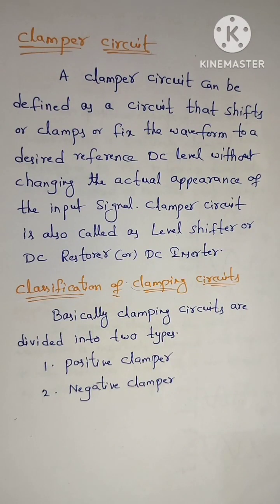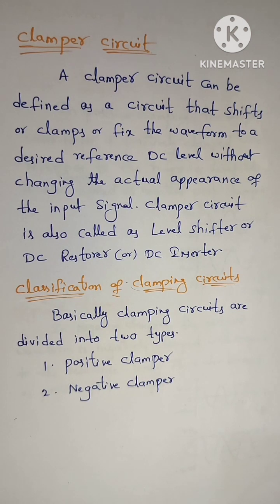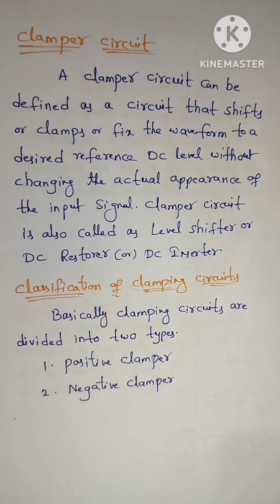A clamper circuit can be defined as a circuit that shifts or clamps or fixes the waveform to a desired reference DC level without changing the actual appearance of the input signal. Clamper circuit is also called as level shifter, DC restorer, or DC inserter.